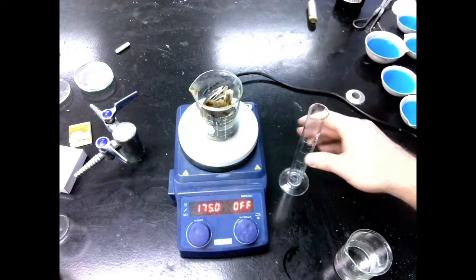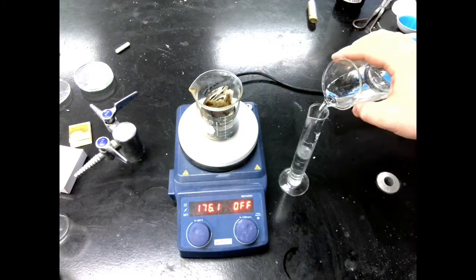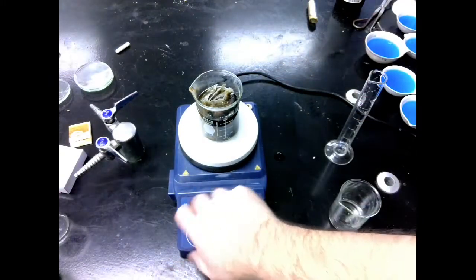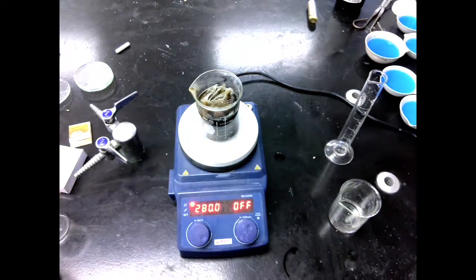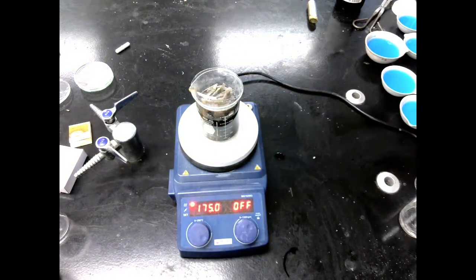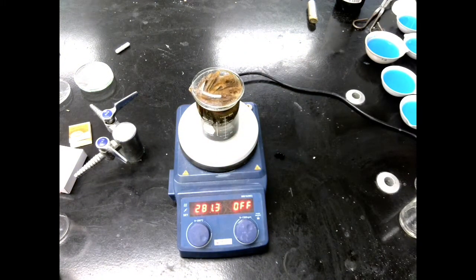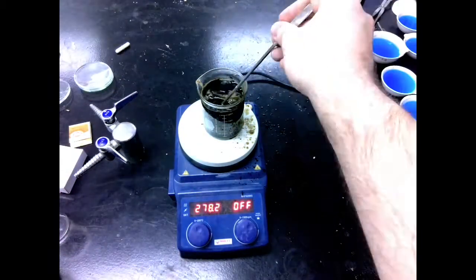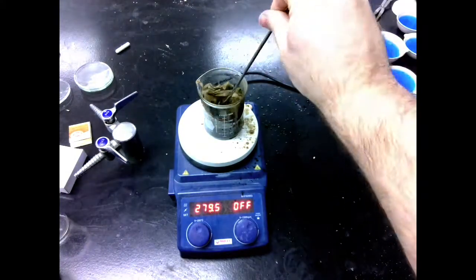Again, distilled water. We don't want to use tap water. That will mess with our solution. Then bring it back up to a simmer, and we're going to do the same process over again. Put the watch glass on, let it come up, and then if it does start to boil over here, we can just take the watch glass off, stir it around, turn down the heat, so on and so forth.